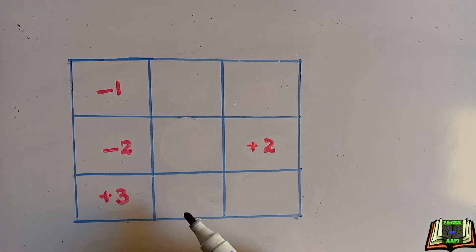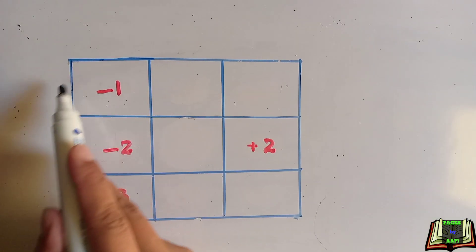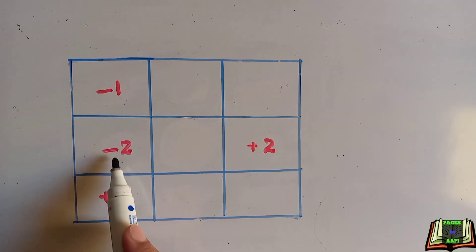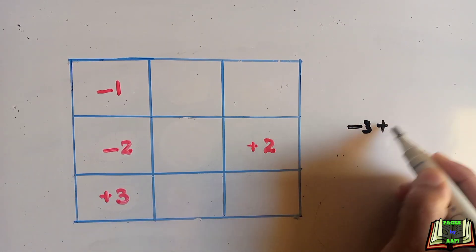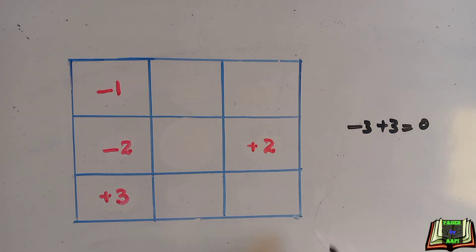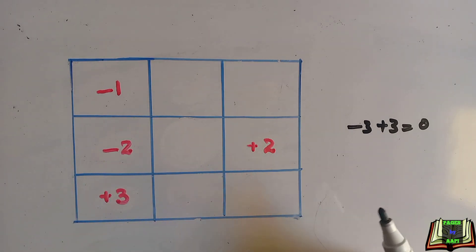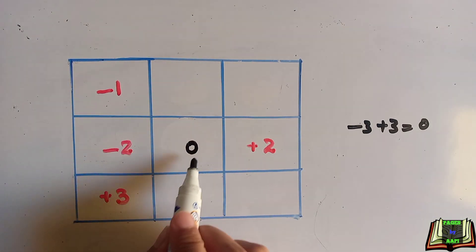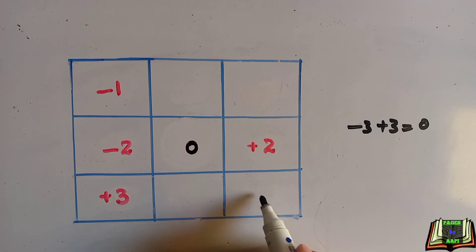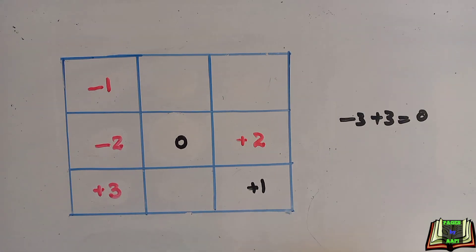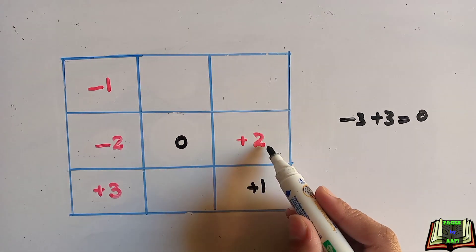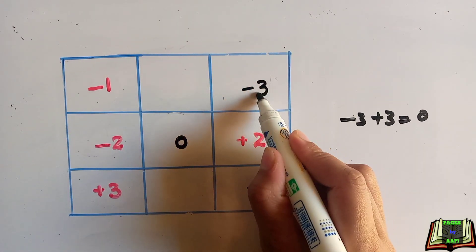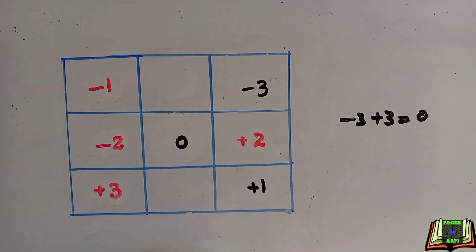For the last question, we find the missing numbers by solving the row, column, or diagonal that is already given. Minus 1 and minus 2 makes minus 3, and plus 3 makes 0, so each row, column, and diagonal must add up to 0. We write 0 in this diagonal. Here it adds up to minus 1, so we add plus 1. In this column, plus 1 and plus 2 add up to plus 3, so we add minus 3 to make 0.